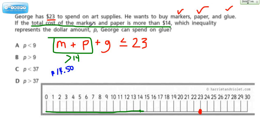Now they want to know which inequality represents the dollar amount P. Instead of using a G, they want us to use a P. George can spend on glue. That means we're talking about this amount right here, this blue amount. That would be for the glue.